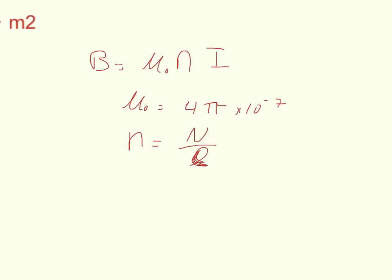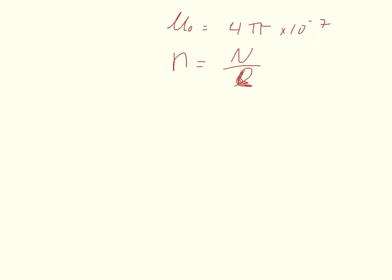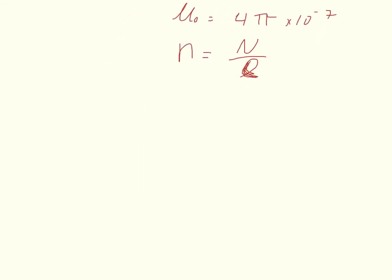The turn density is usually written as a scripty L. We can use this equation to find the magnetic field, and that will give you Part A. Then we want to move into the flux.